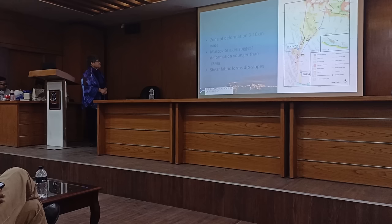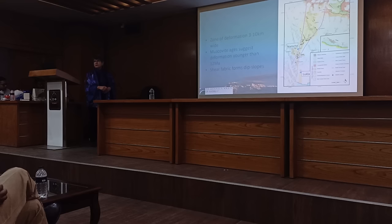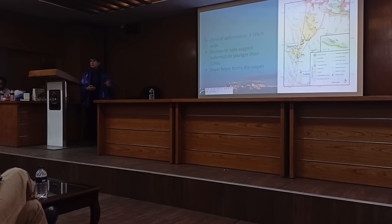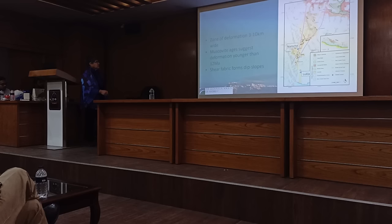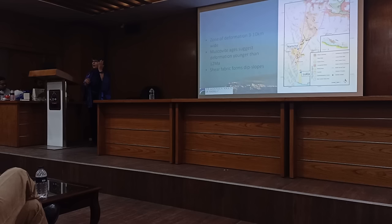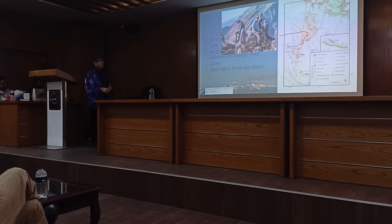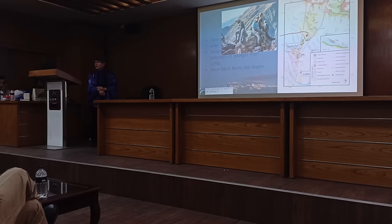We did some preliminary argon-40/argon-39 dating across this area, and the best we could do was determine that the deformation is younger than 12 million years, which doesn't constrain it very well. There's plenty more work to do. Also in this area, there are very strong dip slopes with important relevance for landslides. In geology, a dip slope is a place you don't want to build your house because the rocks are weak on that planar fabric and prone to slipping. Historically there have been a number of landslides that have probably dammed the river and caused big floods.